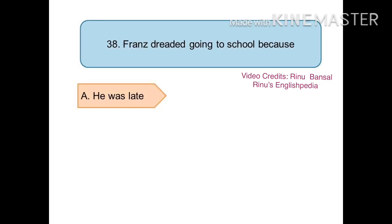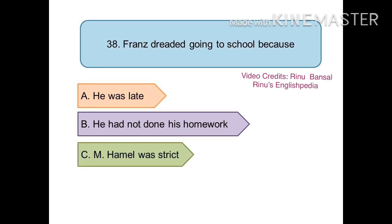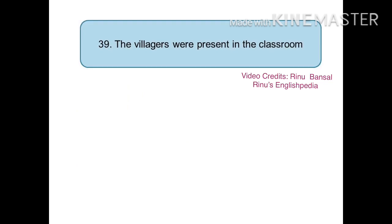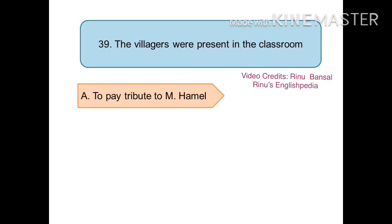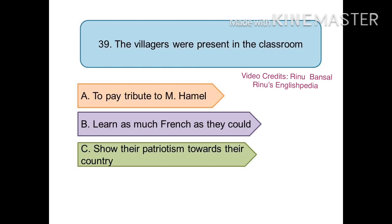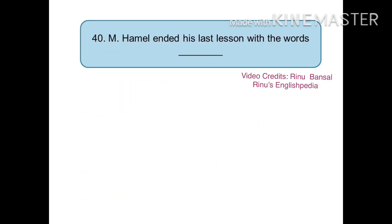The next fill-in-the-blank is: Franz dreaded going to school because blank. The options are (a) he was late, (b) he had not done his homework, (c) Monsieur Hamel was strict, or (d) all the above. The right answer is (d) all the above. The next fill-in-the-blank is: the villagers were present in the classroom too blank. The options are (a) to pay tribute to Monsieur Hamel, (b) to learn as much French as they could, (c) to show their patriotism towards their country, or (d) all of the above. The right answer is (d) all of the above.